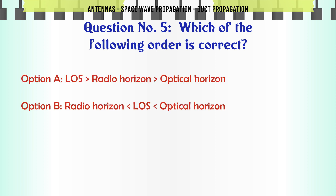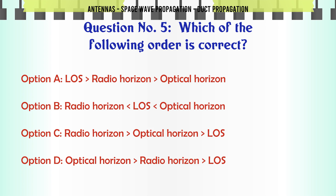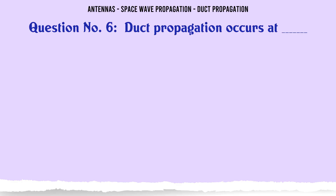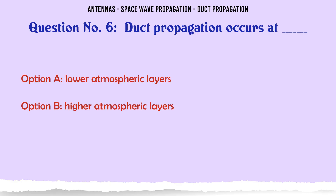Which of the following orders is correct? A) Loss, radio horizon, optical horizon. B) Radio horizon, loss, optical horizon. C) Radio horizon, optical horizon, loss. D) Optical horizon, radio horizon, loss. The correct answer is: loss, radio horizon, optical horizon.